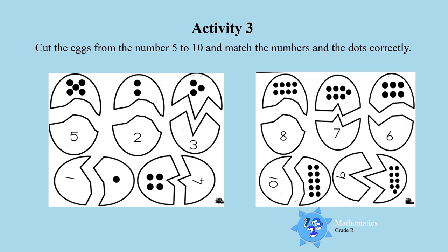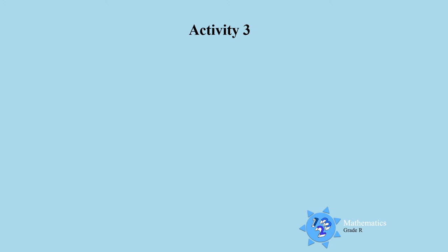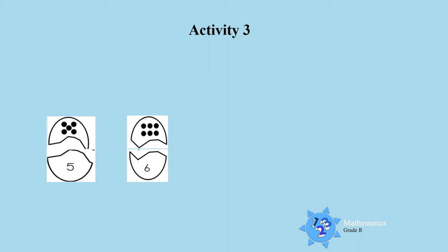Now let's count the dots. 1, 2, 3, 4, 5. So number 5 must go there. Very good. 1, 2, 3, 4, 5, 6 dots. And the number 6.